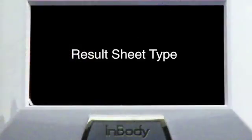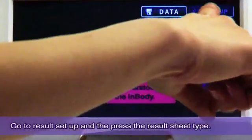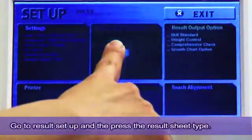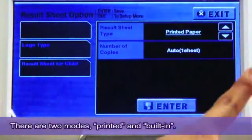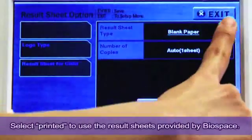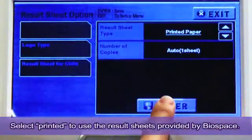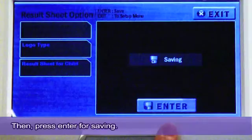Result Sheet Type. To modify the result sheet type, go to Setup and then press the result sheet type in Result Sheet option. There are two modes: Printed and Built-in. Select Printed to use the result sheets provided by Biospace. Then press Enter for saving.